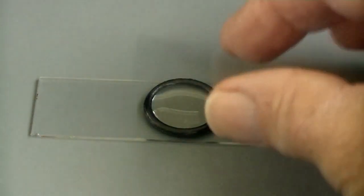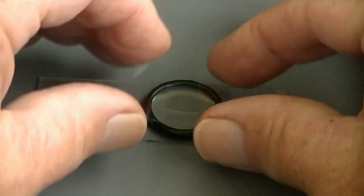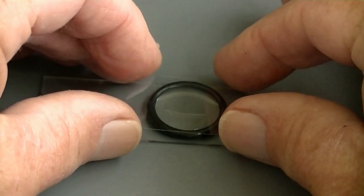Now gently lower the cover slip from one side, and expel any excess liquid from the other side.